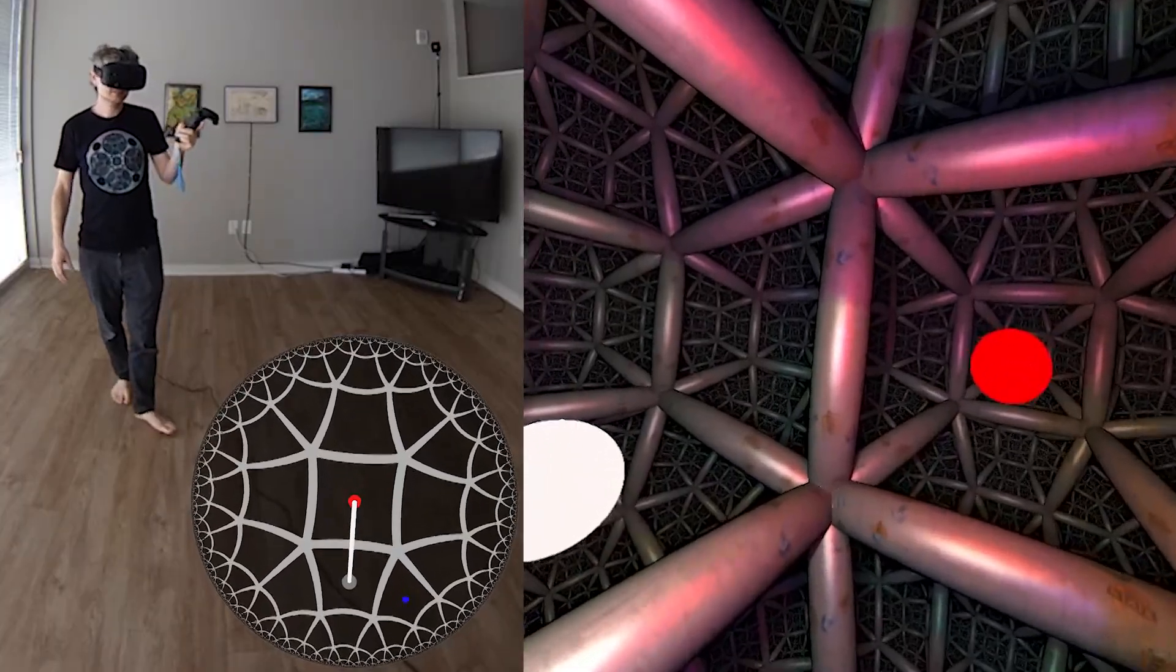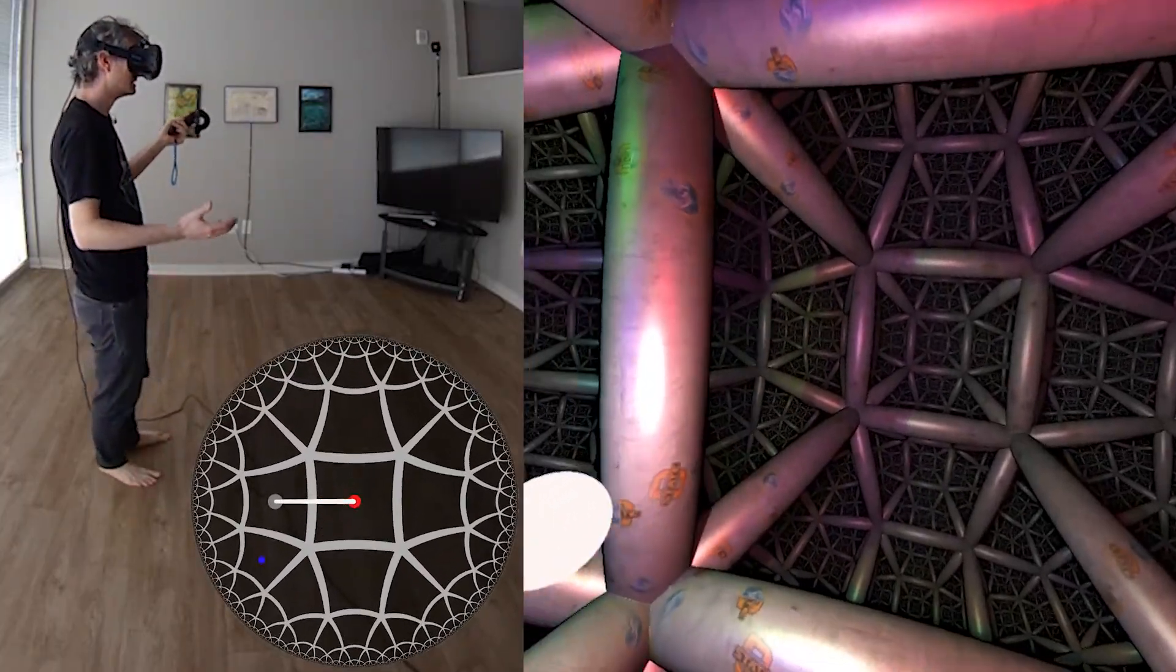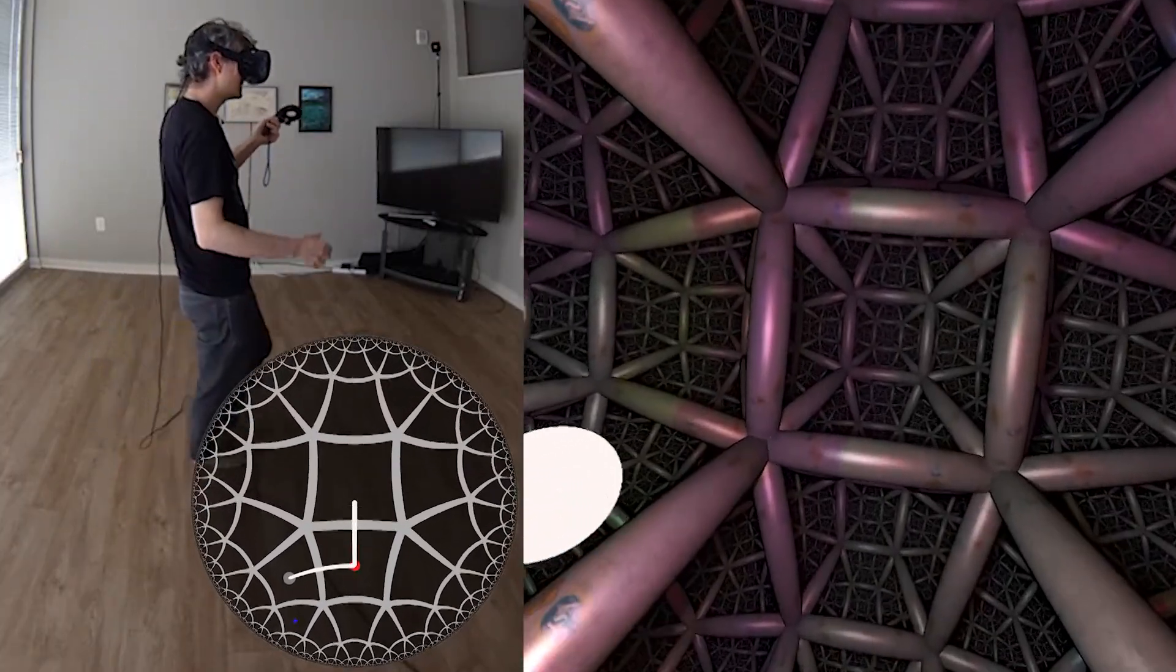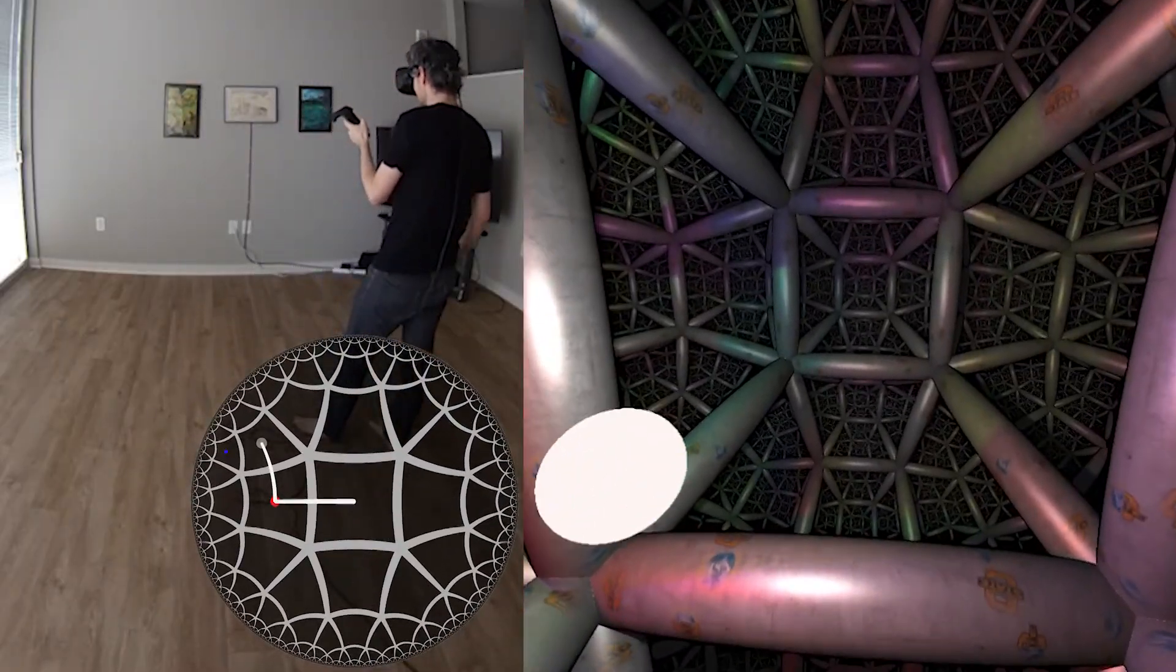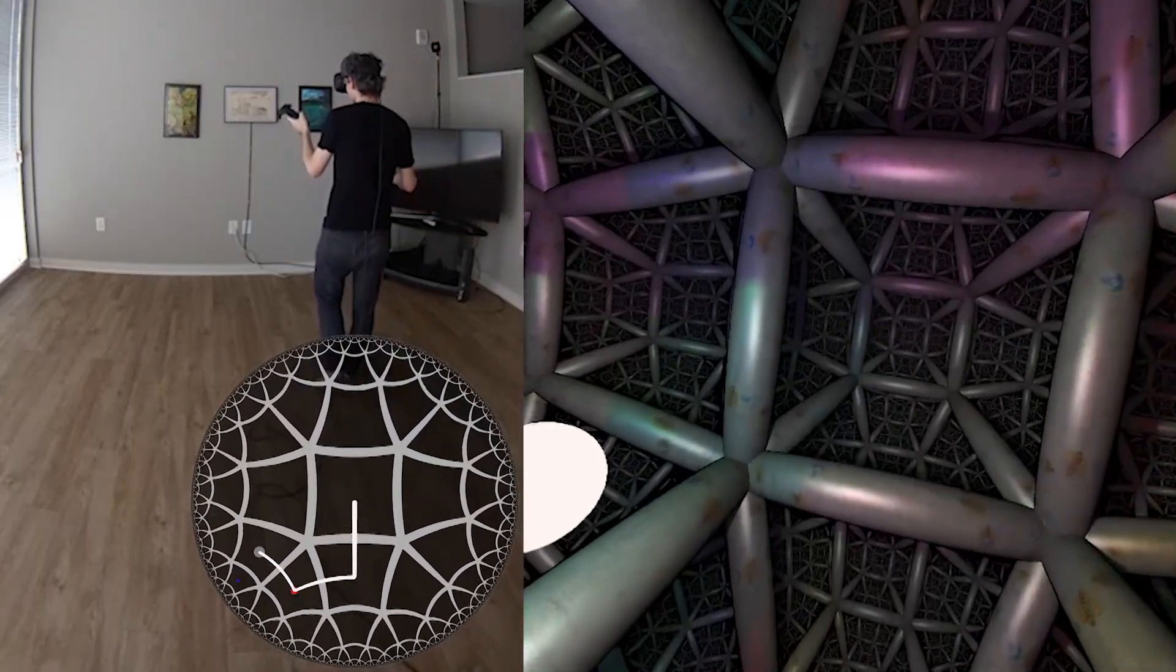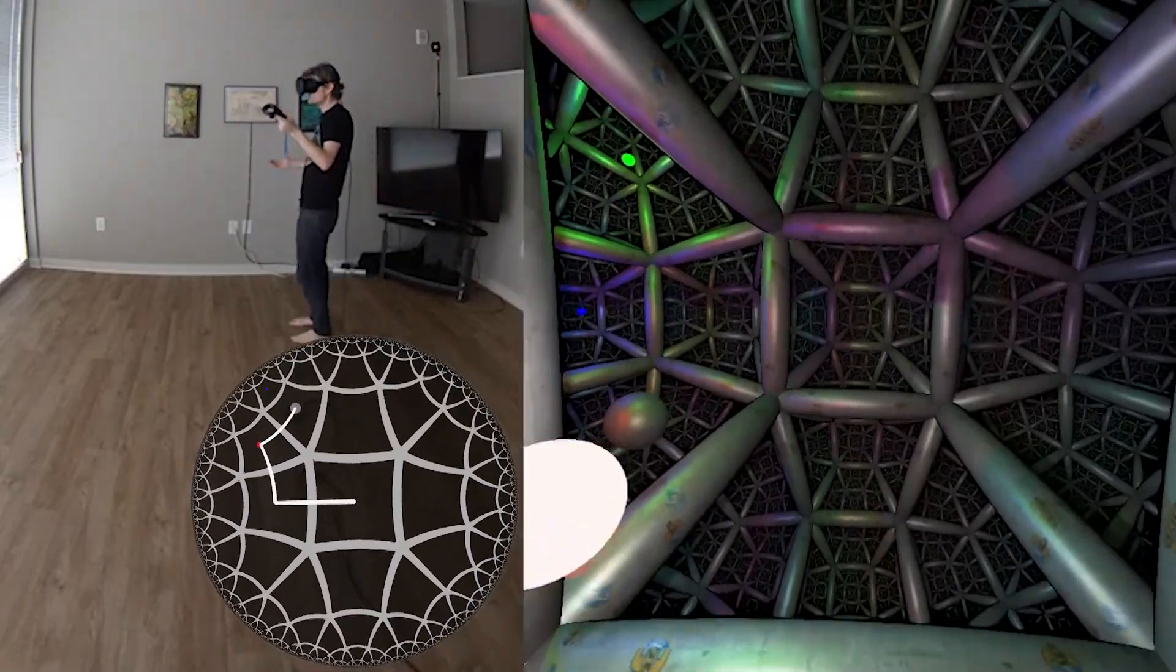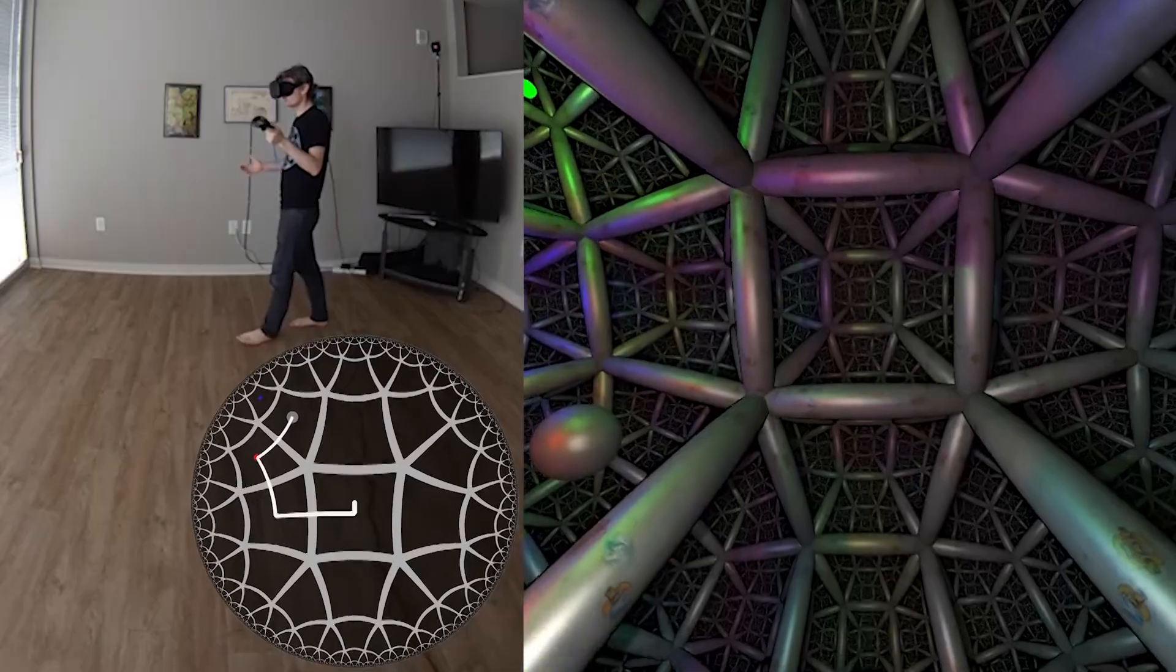So this world is curved a little bit like how space is curved near a black hole. Light rays travel along strange curved paths and so on. And so there's going to be a mismatch between where I end up in the real world and where I end up in the virtual world.